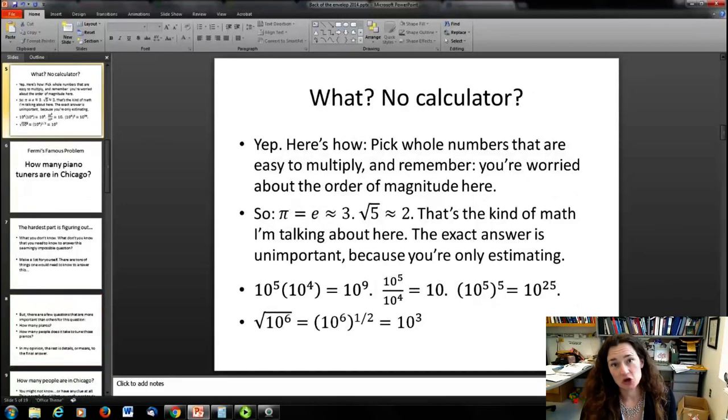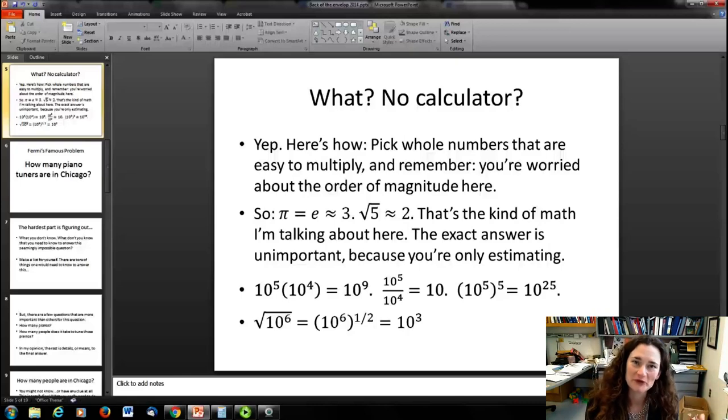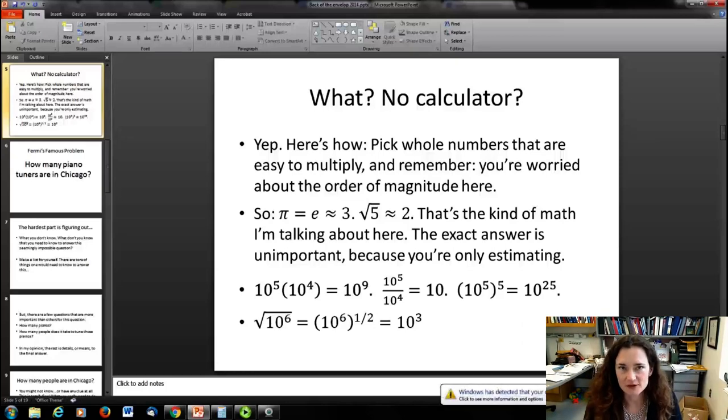When you're making these estimates, pick whole numbers that are easy to multiply, and you're just worried about the order of magnitude. For example, if you're calculating the area of a circle and you need to do πr², then π = 3.14159... is really 3. That's where we're going with these order of magnitude calculations. By the way, e = 2.718... is also 3, and √5 is 2.